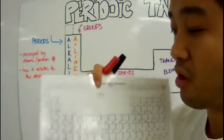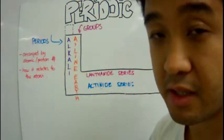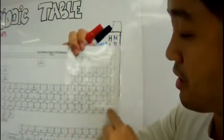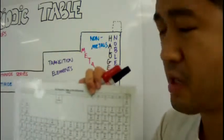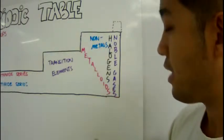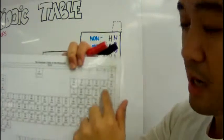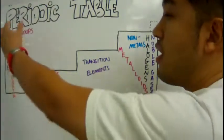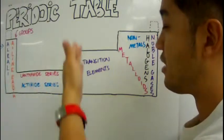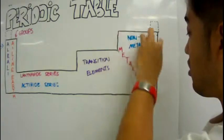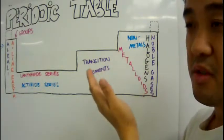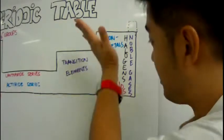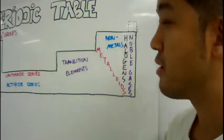The second group is called the alkaline earth metals. The last group on the right is called the noble gases. The second-to-last group are called the halogens. So we've got alkali metals, alkaline earth metals, lanthanides, actinides, transition elements, non-metals, halogens, and noble gases. And then there are elements that sometimes act like metals and sometimes don't — they are called metalloids or semi-metals.